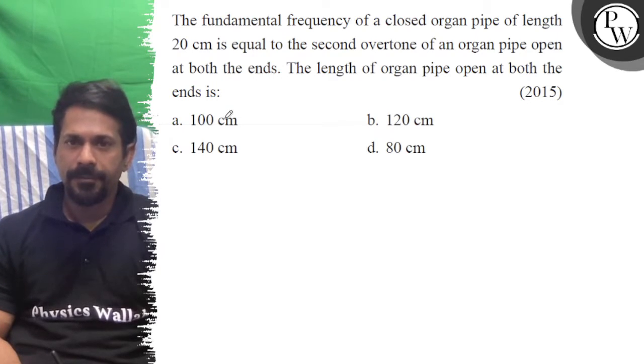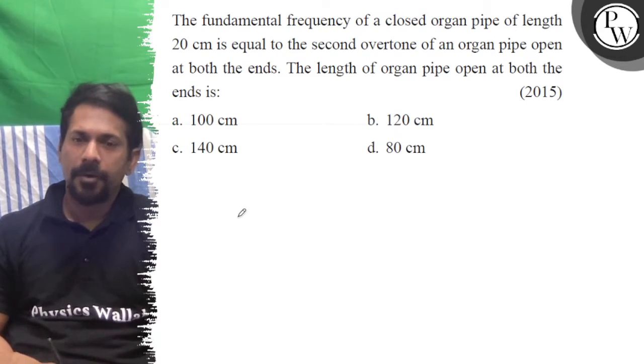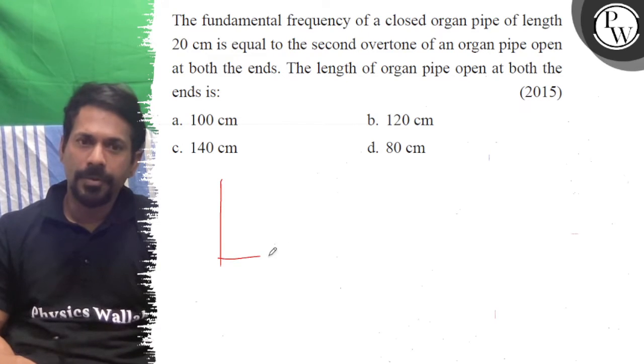Hello everyone, let's see the question. The fundamental frequency of the closed organ pipe of length 20 is equal to the second overtone of an organ pipe, open organ pipe. The length of the organ pipe... fundamental of closed.